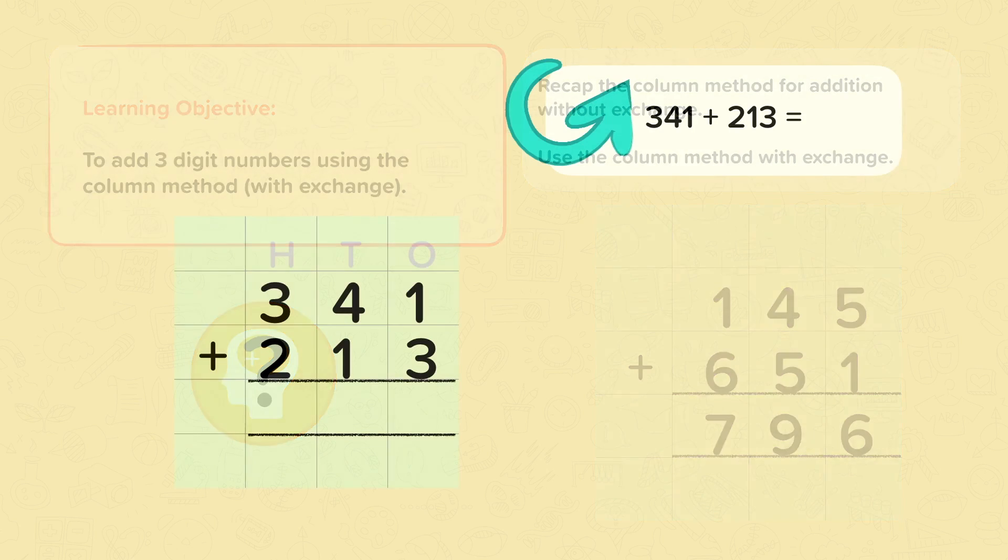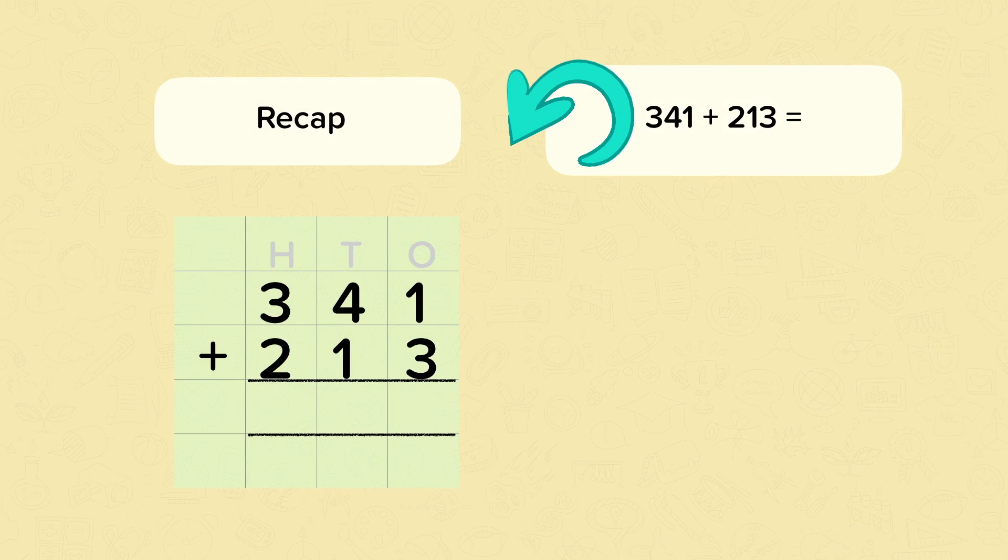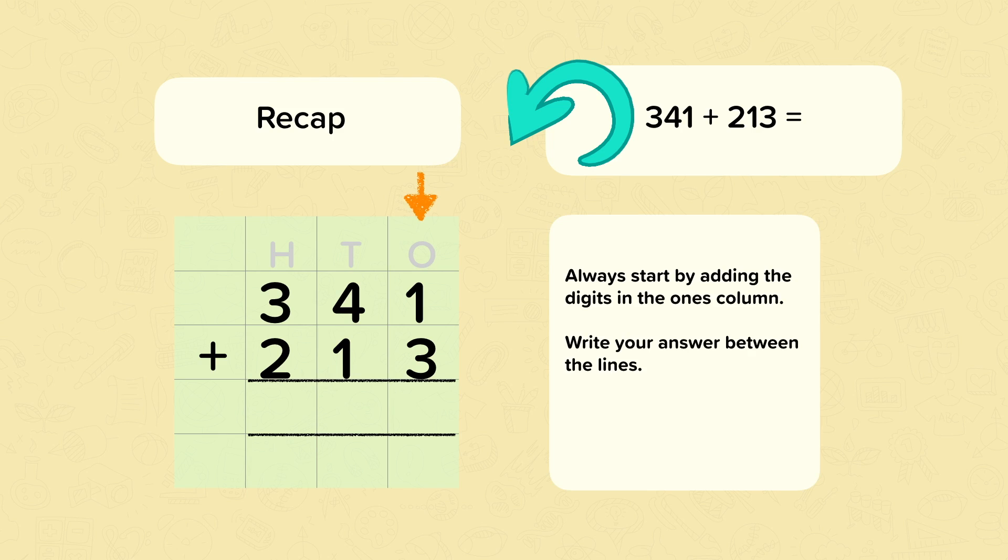So first of all, let's recap. We've got 341 add 213. All of the numbers have been lined up in the correct column. We're going to add the numbers in each column together, and we're going to write the answers between the lines.